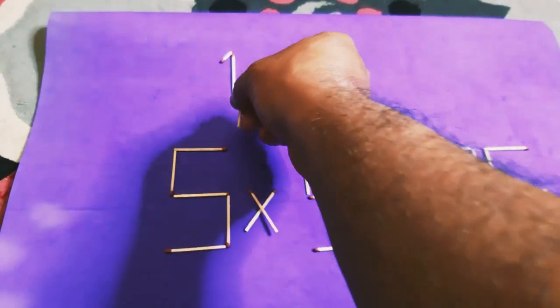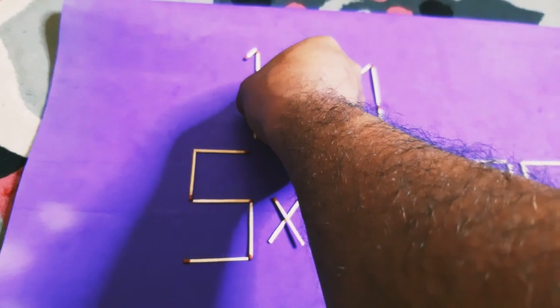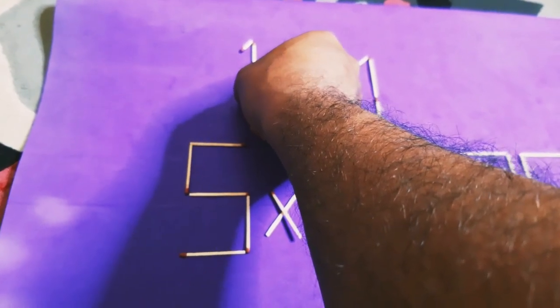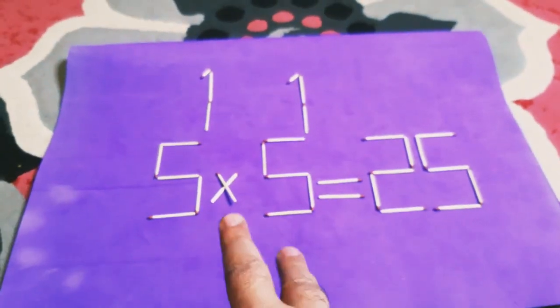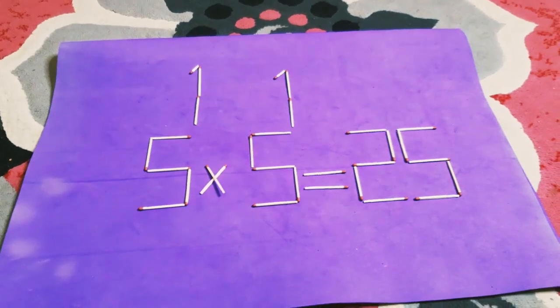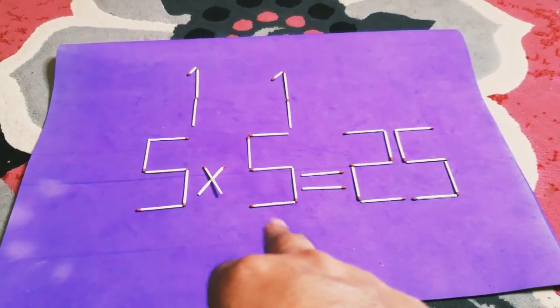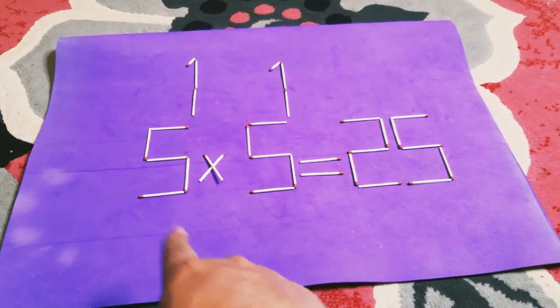Now we have an exponential number multiplied by another exponential number, and the bases are the same, so we take only one base.